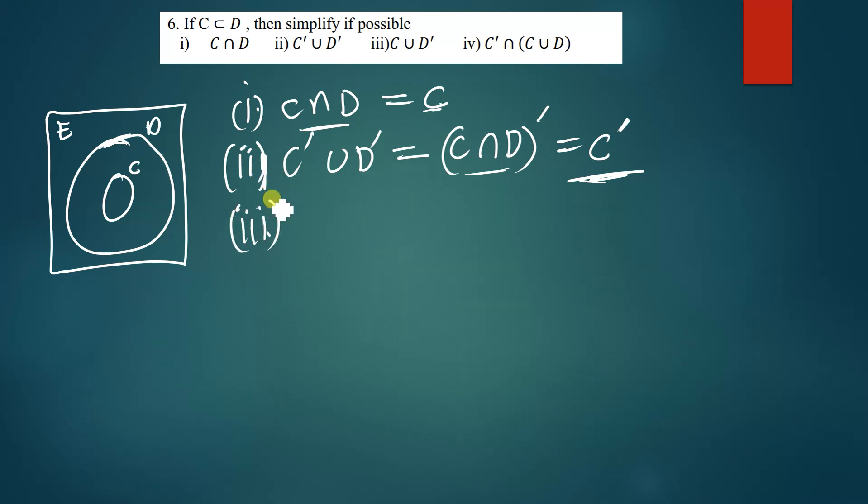We move on to part three. Part three of this question is asking us to simplify c union d complement. So c is simply just this set here, then d complement is anything that is outside this set. If you look at this and find the simplest version, you can maybe leave it like this or you can simplify it by just changing the operation there, which will mean - let's first use De Morgan's. De Morgan's means that this will be c complement intersection d and then complement outside there.